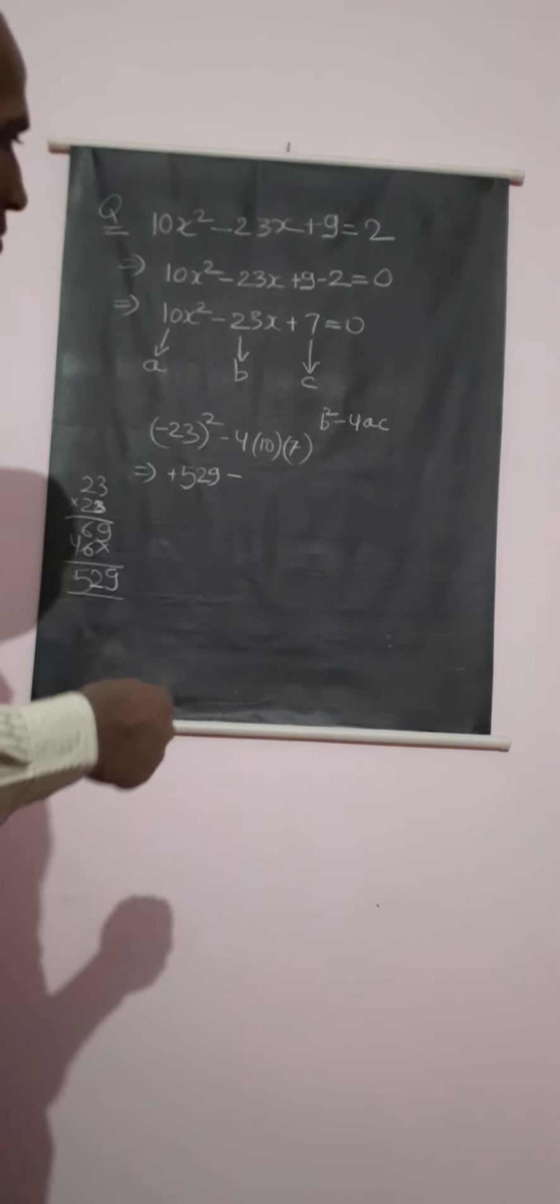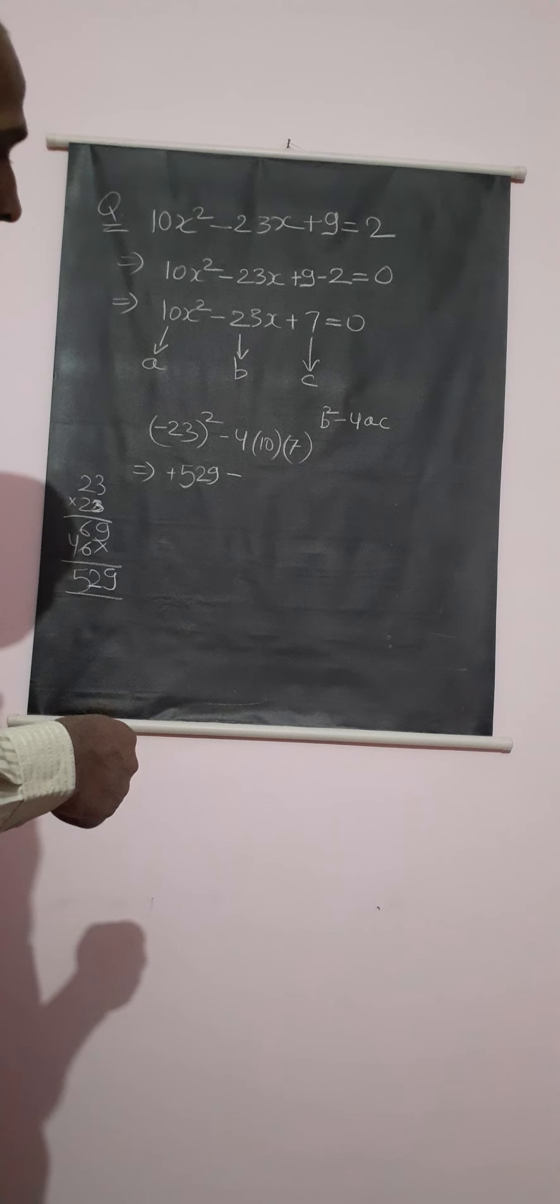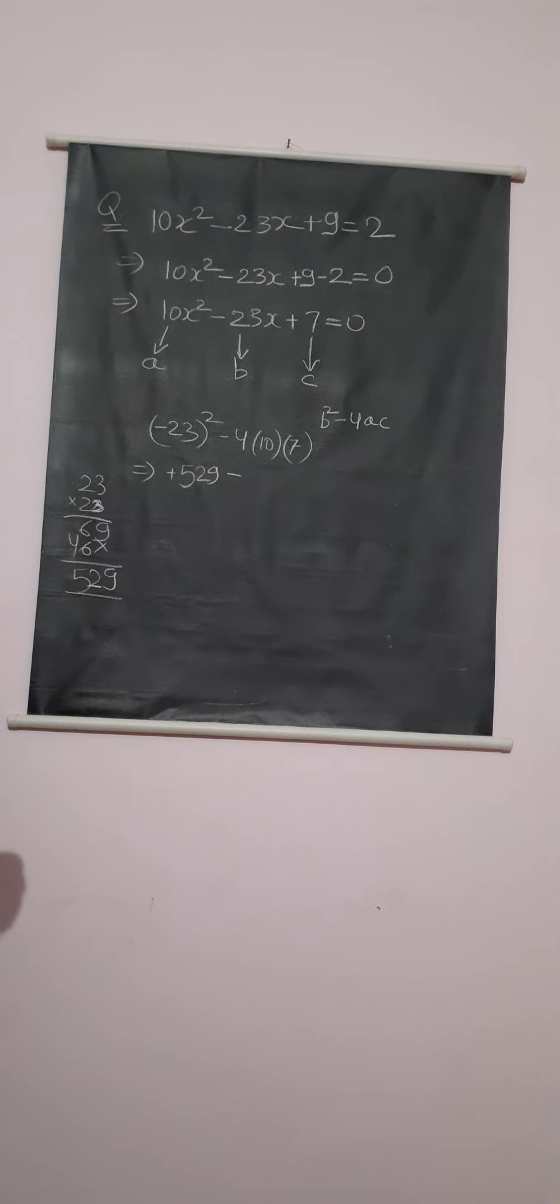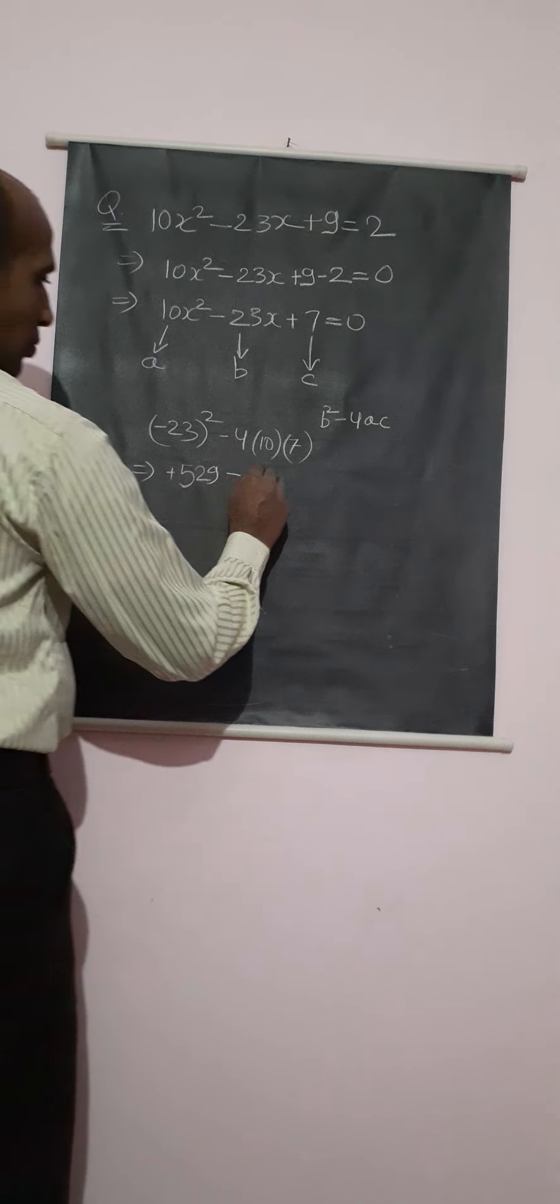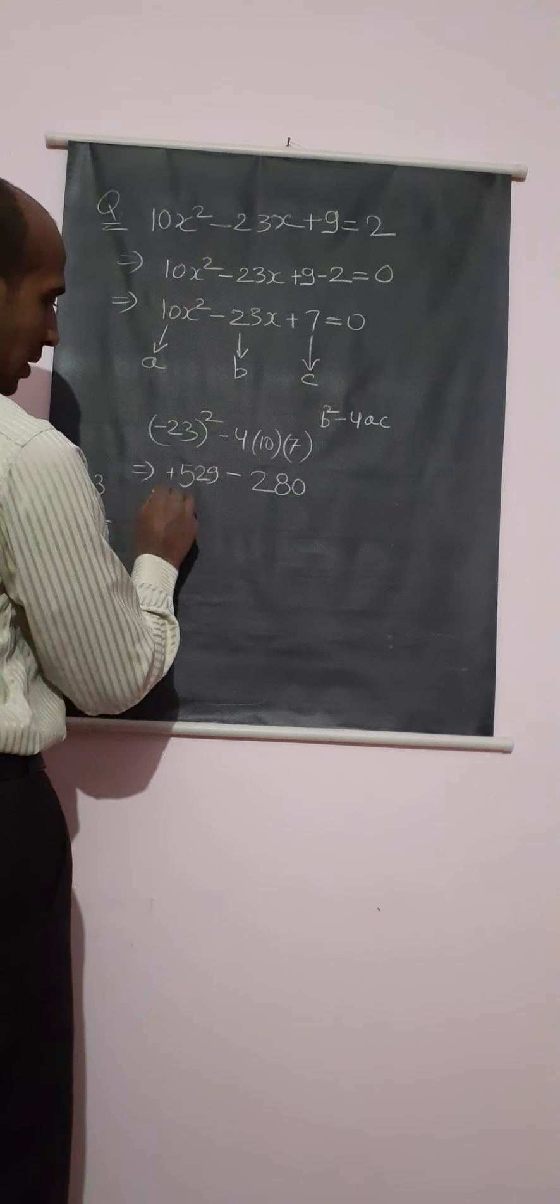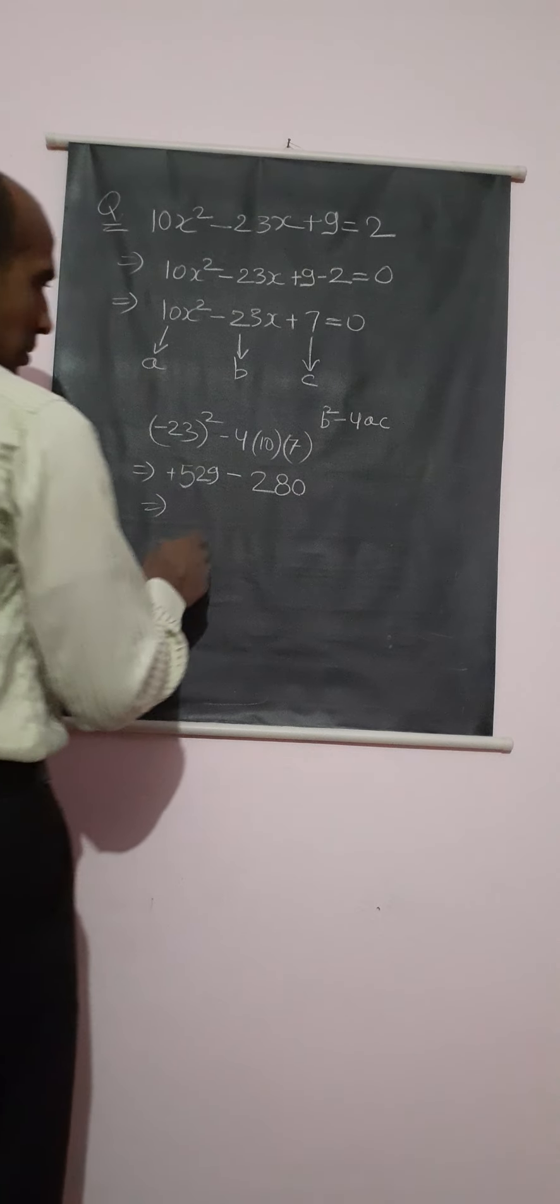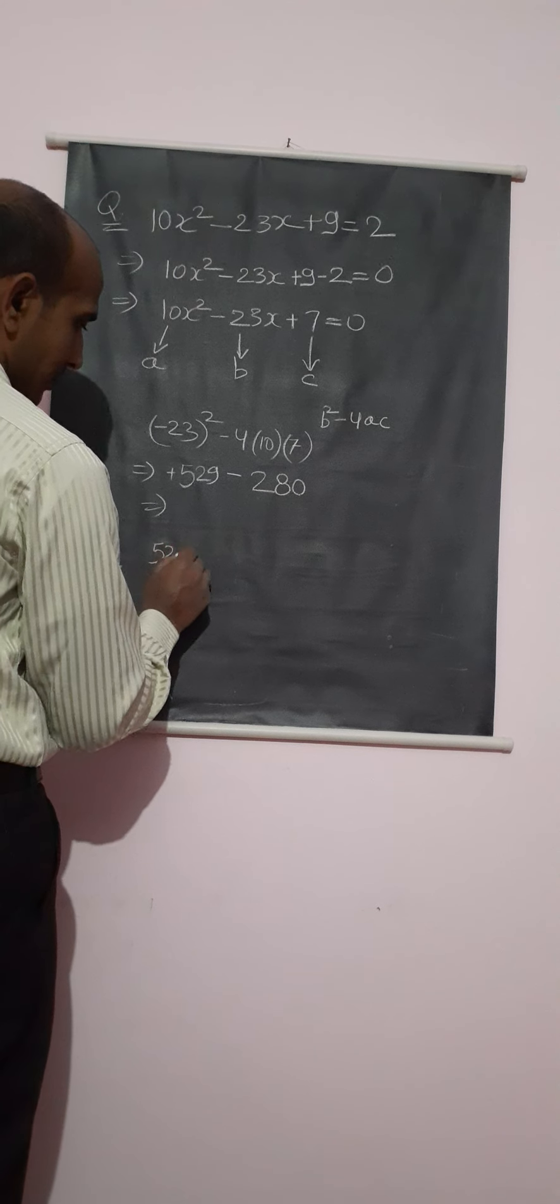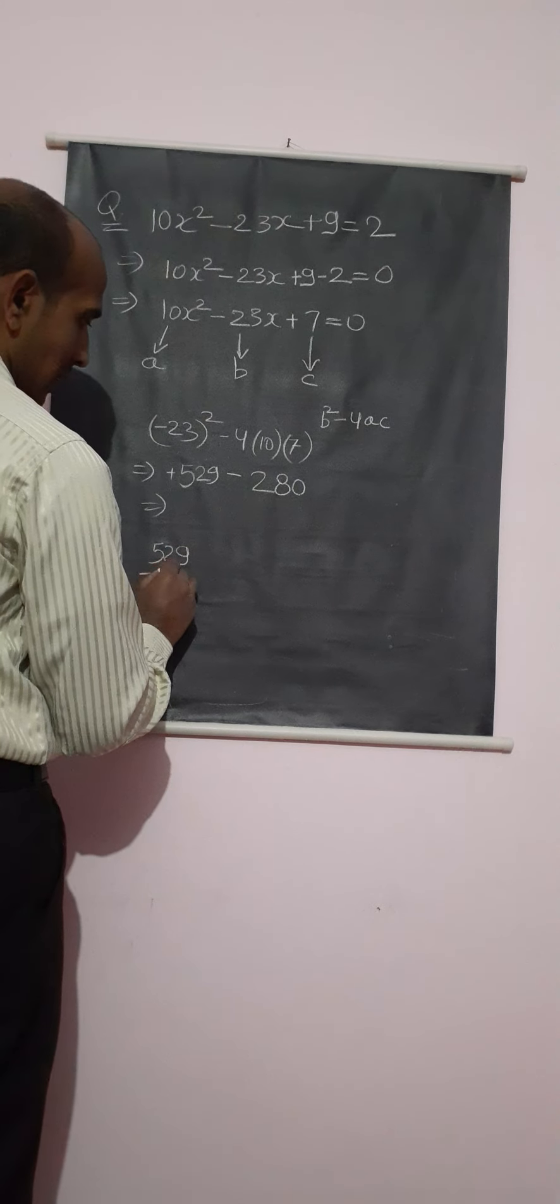The value of 4 multiplied by 10 multiplied by 7 - the answer will be 280. So when we subtract these terms, we will get 529 minus 280.